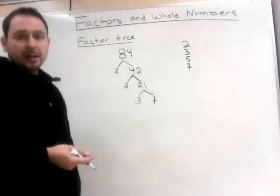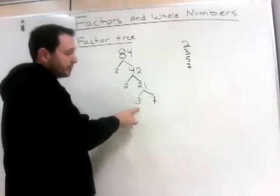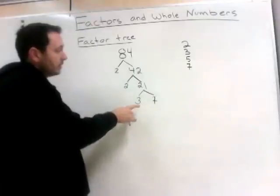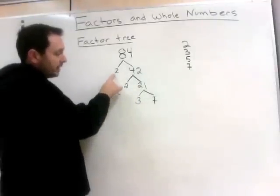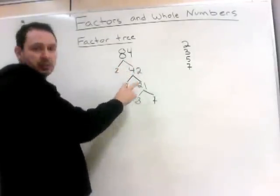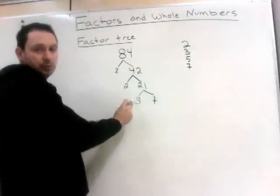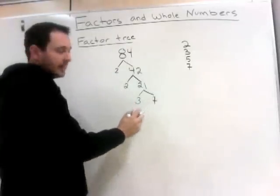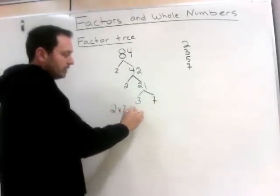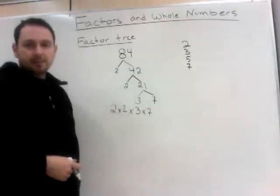And now at this point, we're done. We've run out of numbers that are divisible. So if we take the left side of our branches — that's why it's called a factor tree, because each of these are branches — we have a 2, a 2, a 3, and a 7. So this is 2 times 2 times 3 times 7.